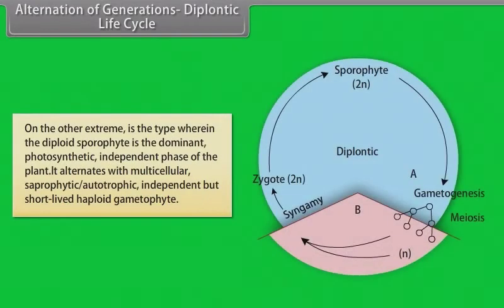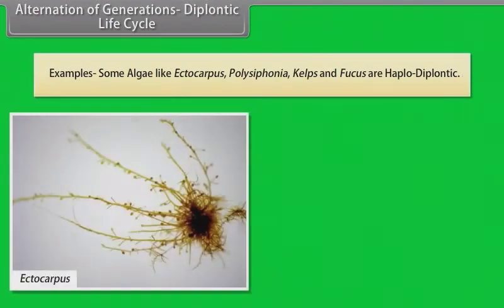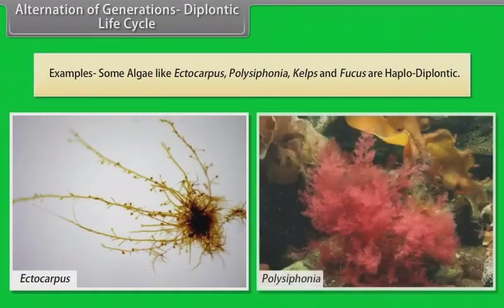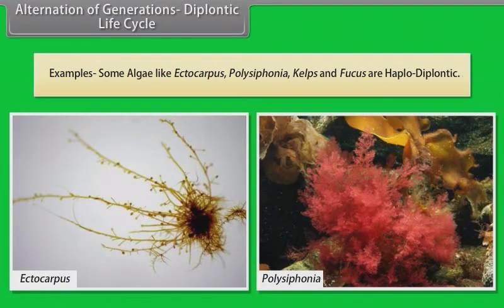Diplontic life cycle. On the other extreme is the type wherein the diploid sporophyte is the dominant photosynthetic independent phase of the plant. It alternates with a multicellular, autotrophic, independent but short-lived haploid gametophyte. Examples: Some algae like Ectocarpus, Polysiphonia, kelps and Fucus are haplodiplontic.